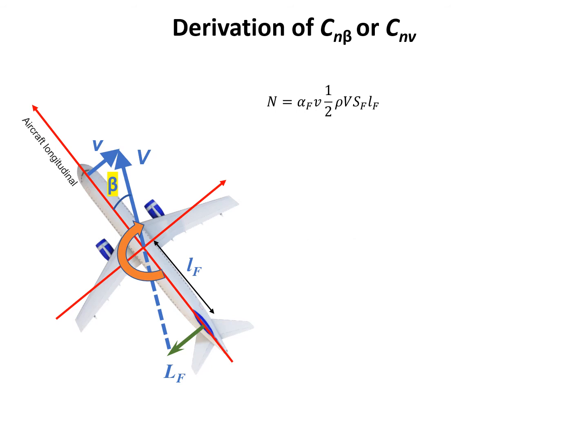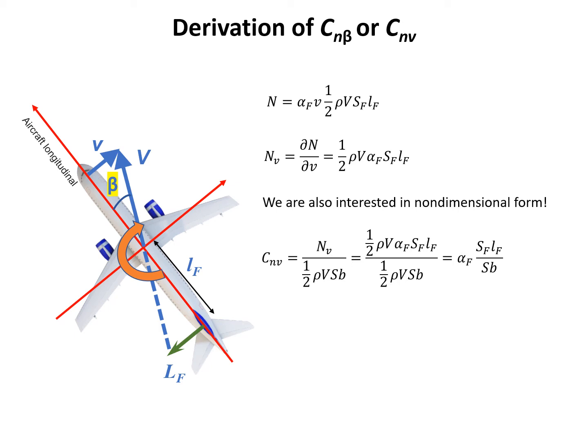Now we need to calculate the derivative ∂N/∂v. We just divide N by V to get this relation. Since we are interested in its non-dimensional form, we need to look at the table from the previous lecture to determine the denominator. The denominator would be ½ρVSb because it is the moment with respect to linear velocity. Eventually we do some simplification and can have α_F times S_Fl_F divided by Sb. We can notice S_Fl_F actually has a dimension of a volume.